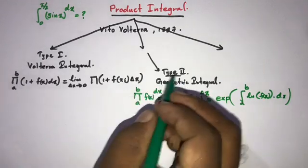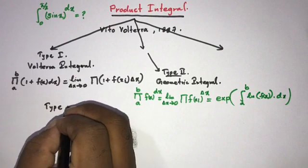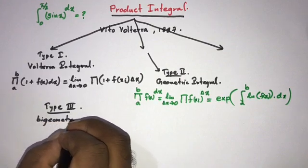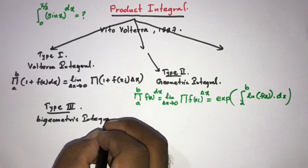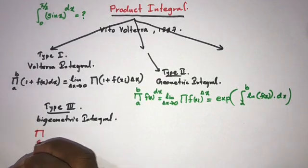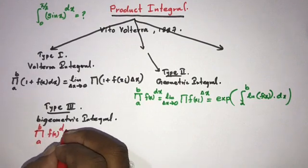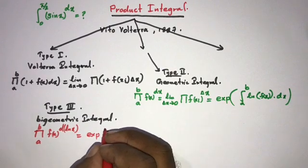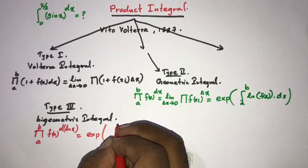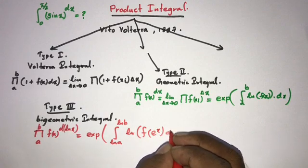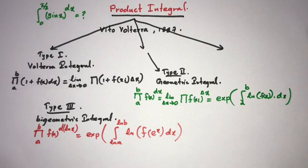Type 3 is the bigeometric integral. The general formula is: product from a to b of f(x) raised to the d(ln x) equals exp of the integral from ln(a) to ln(b) of the natural log of f(e^x) dx.